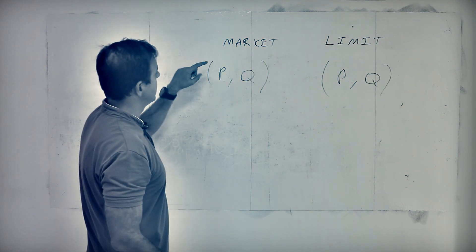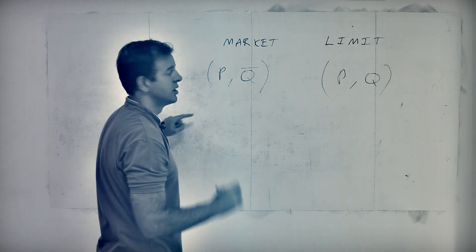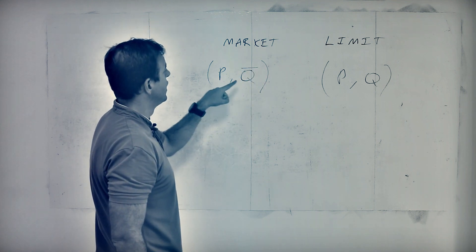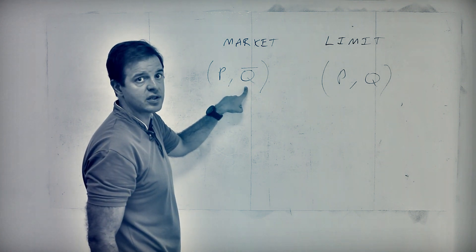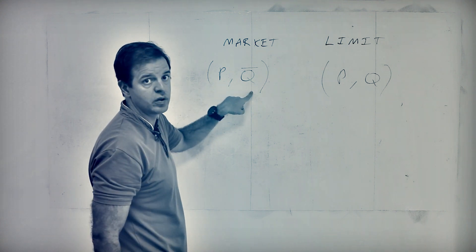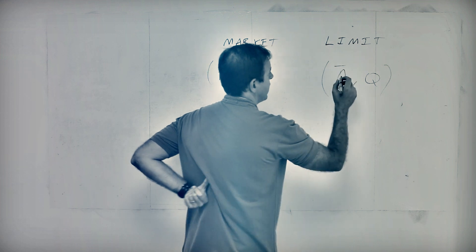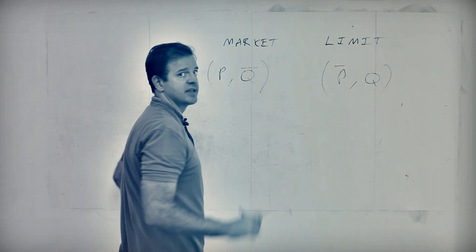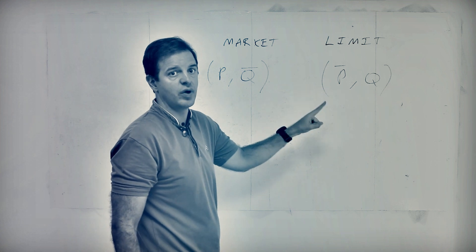But the difference is that in one case, the quantity is fixed. So in a market order, you want to get your car no matter the cost. And basically, the price is a function of the quantity. Whereas in limit, you want to get rid of your car only if it's at a given price. So quantity is a function of price. It's the other way around.